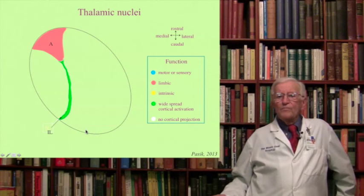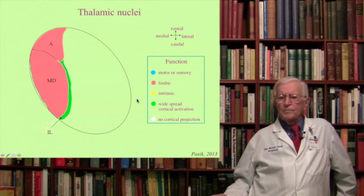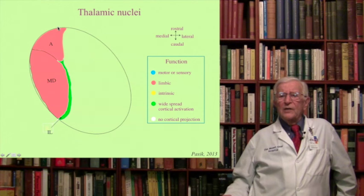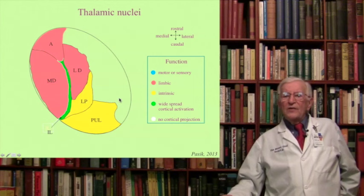Medial to the lamina, you have a large nucleus called the medial dorsal nucleus of the thalamus, which is mostly of limbic nature. Then there is a very large lateral mass containing various nuclei from rostral to caudal: the lateral dorsal, the lateral posterior, and the pulvinar, which is the caudal pole of the thalamus. Under this lateral mass are the ventral nuclei, which are very large and overflow the lateral margin.